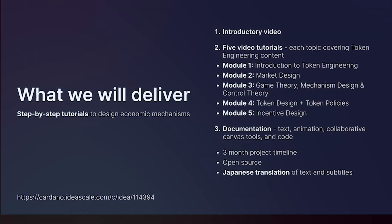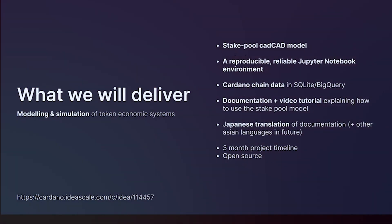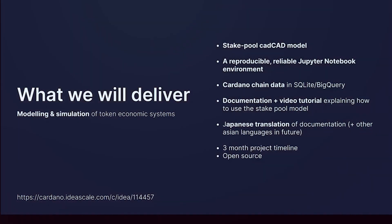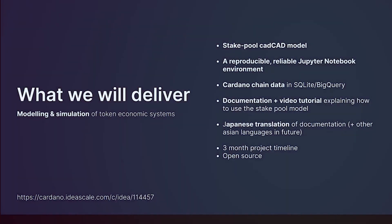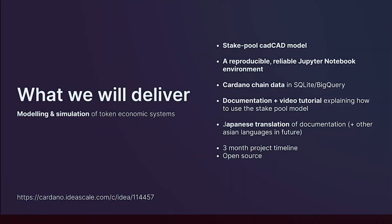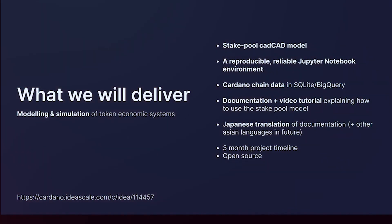A key part of token engineering is being able to test, validate, and then optimize your token design. Currently, most teams make decisions based on how they feel it is right, or they just copy from other projects. We can use modeling and simulation tools to make informed decisions and implement optimal solutions.